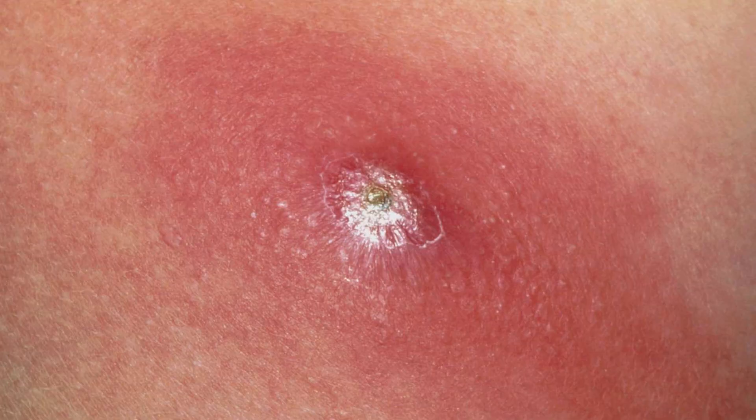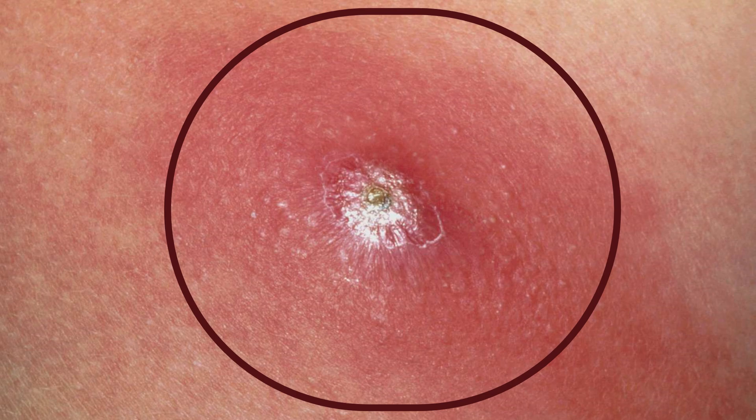If we look at a boil, a boil is most commonly due to a bacterial infection. A boil tends to be quite tender to touch, red, warm, and swollen. Usually a boil would have a yellow head where it releases some pus. That's how a boil tends to present.